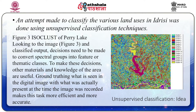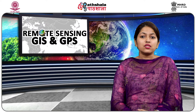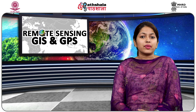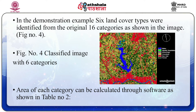At this point the image is difficult to interpret. Looking at the image and classified output, decisions need to be made to convert spectral groups into thematic classes. Other material and knowledge of the area are useful. Ground-truthing — matching what is seen in the digital image with what was actually present when the image was recorded — makes this task more efficient and accurate. If this knowledge is not available, scientific reasoning may be used to group categories into land use categories. In the demonstration example, 6 land cover types were identified from 16 categories, as shown in figure number 4. Area of each category can be calculated through the software as shown in table number 2.